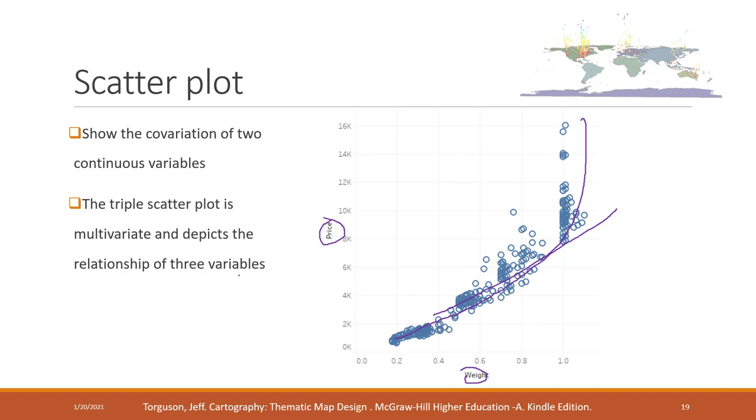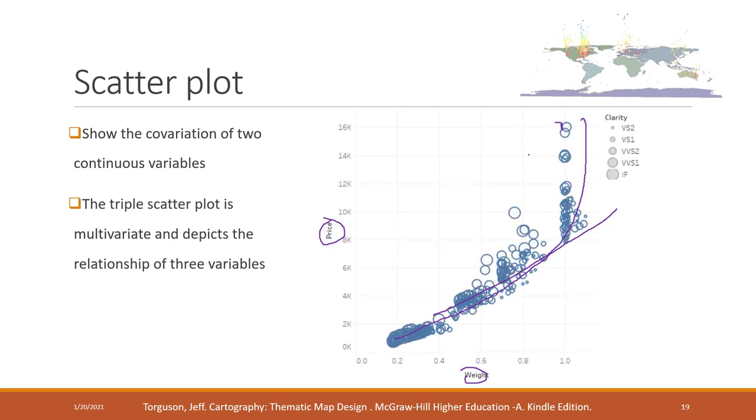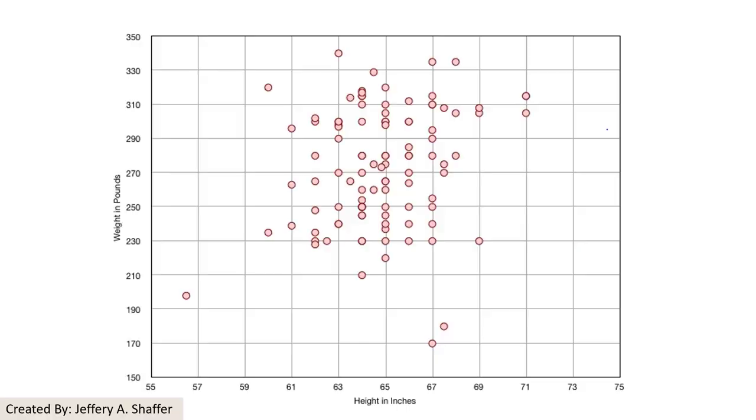Sometimes we can also change the scatter plot so that we can add additional variables. For example, we can change the size of those dots or we can change the color of those dots. In this case, I am changing the size of the dots representing the clarity. So we can see how the clarity will play a role in determining the price.